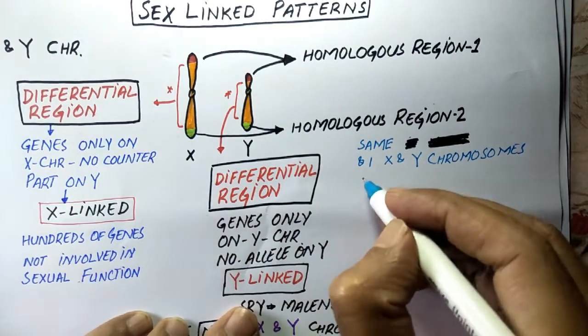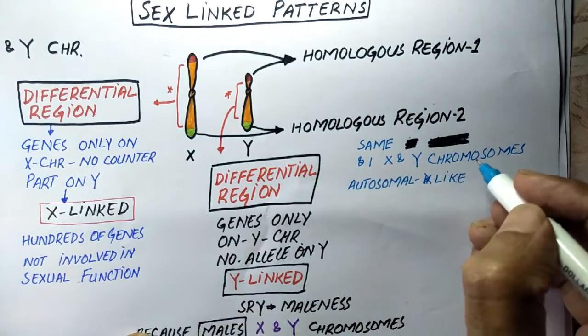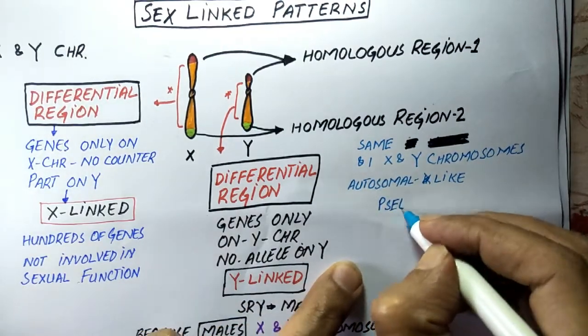The genes are called pseudo-autosomal genes because they are present on both X as well as Y chromosomes.